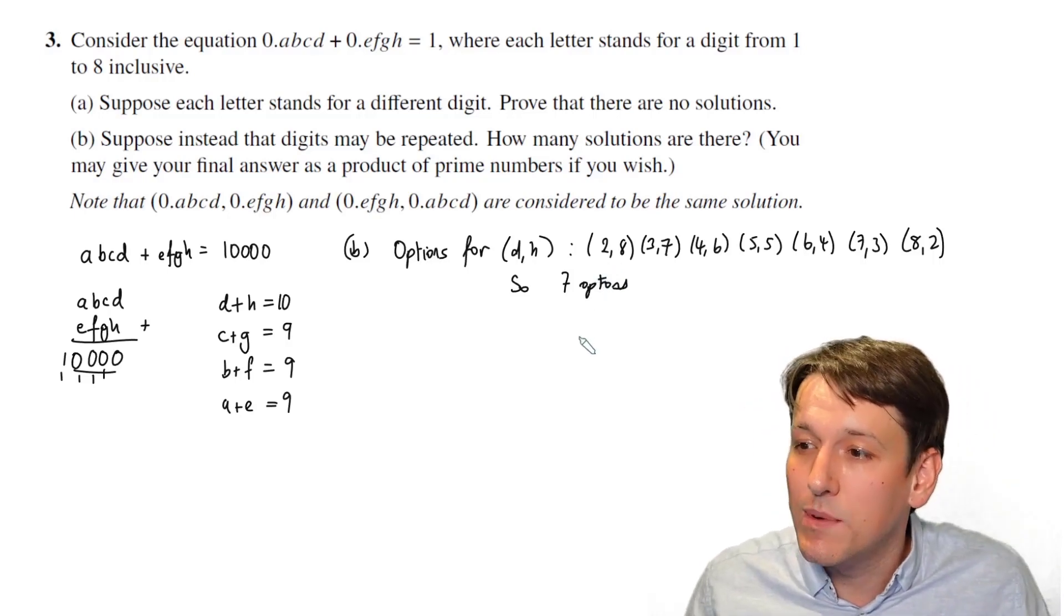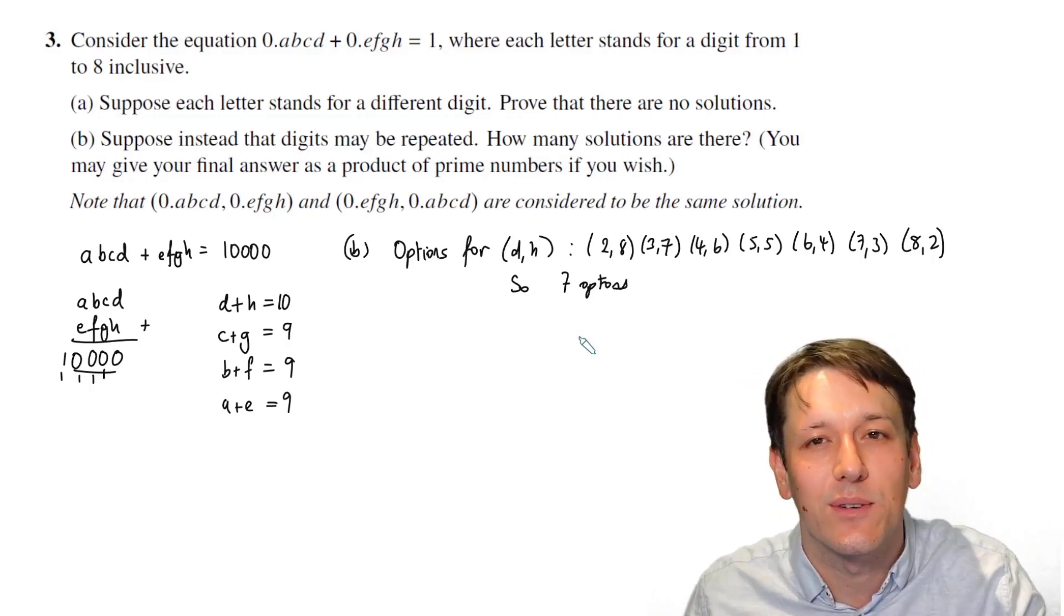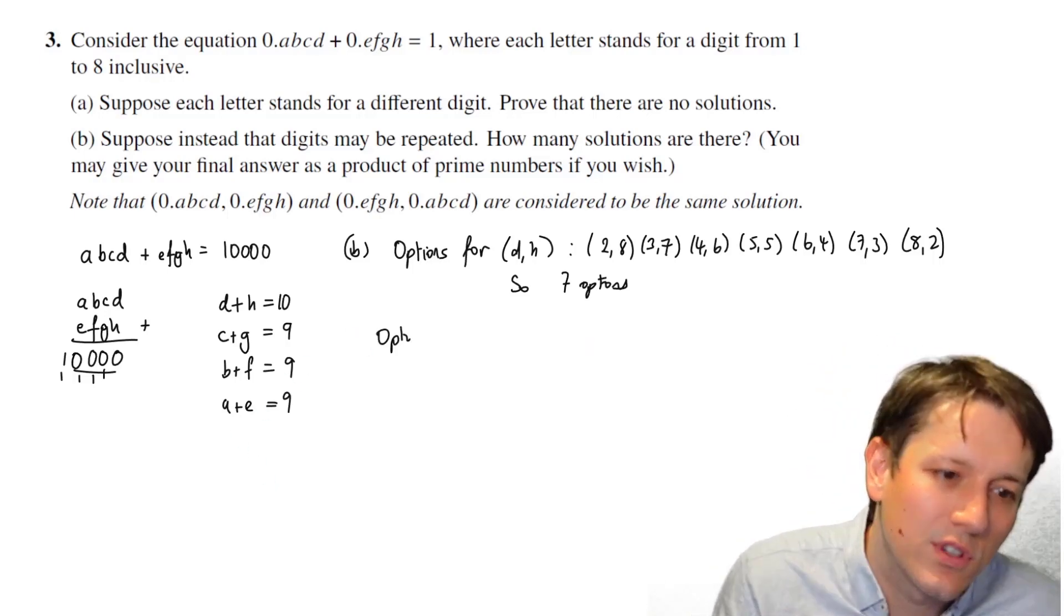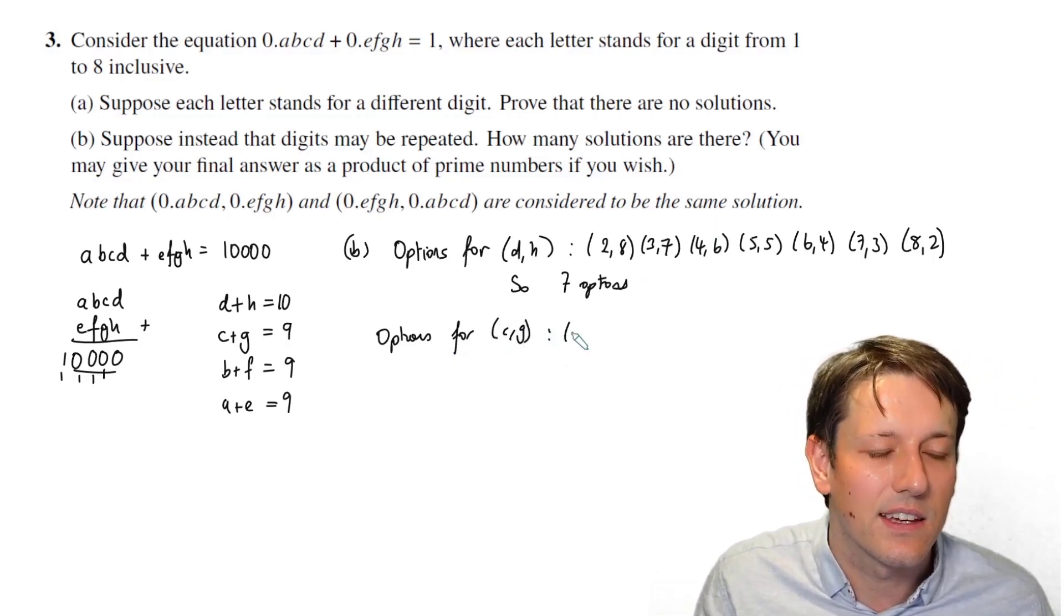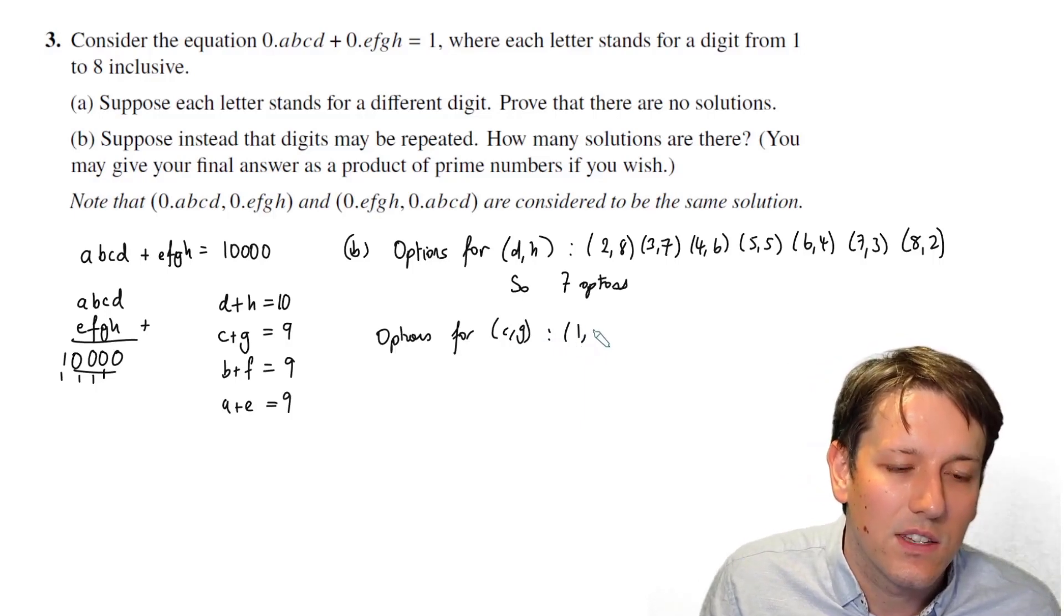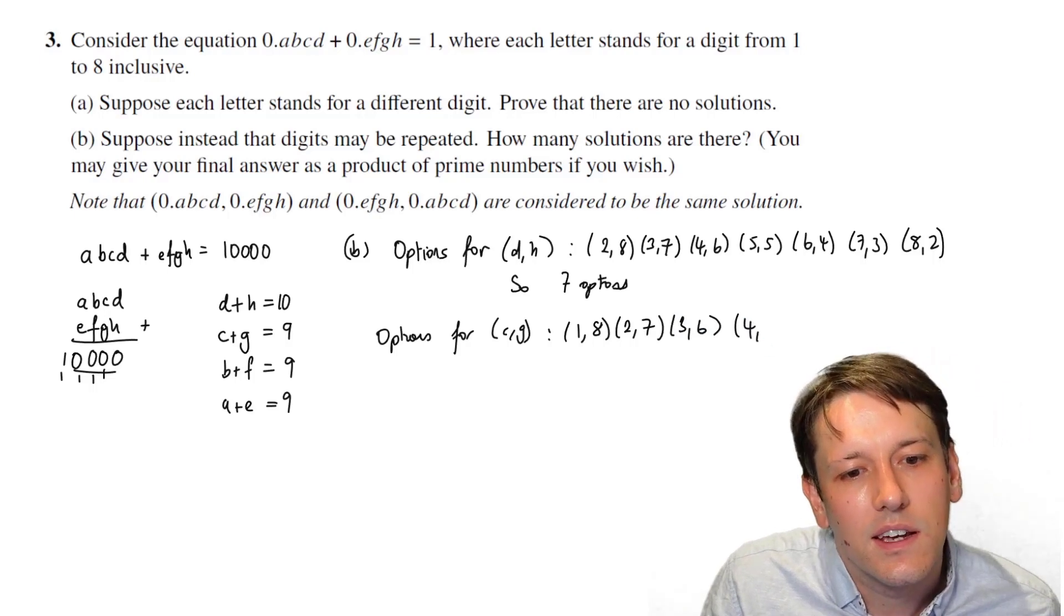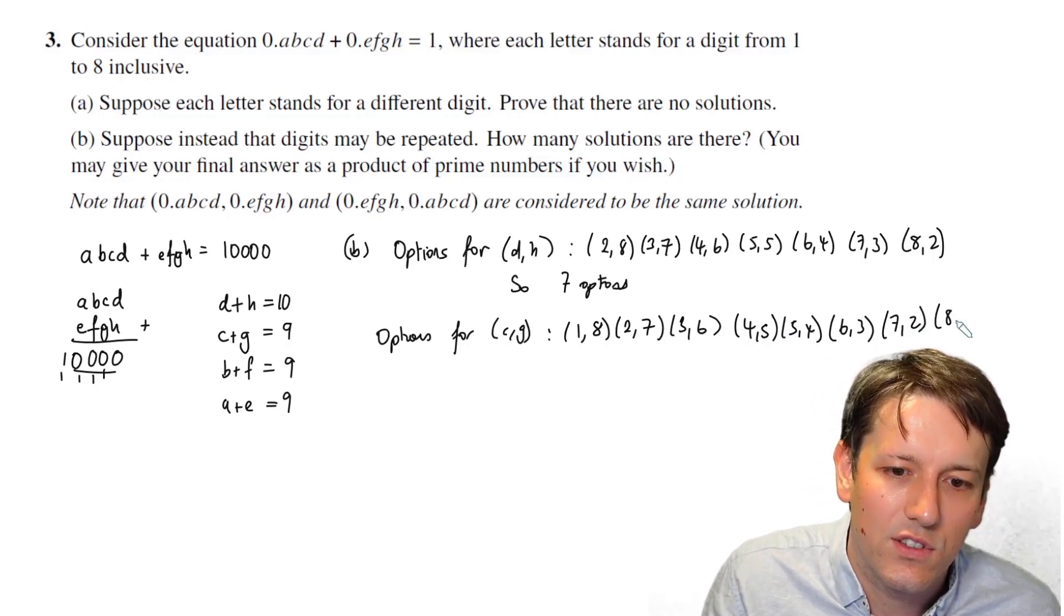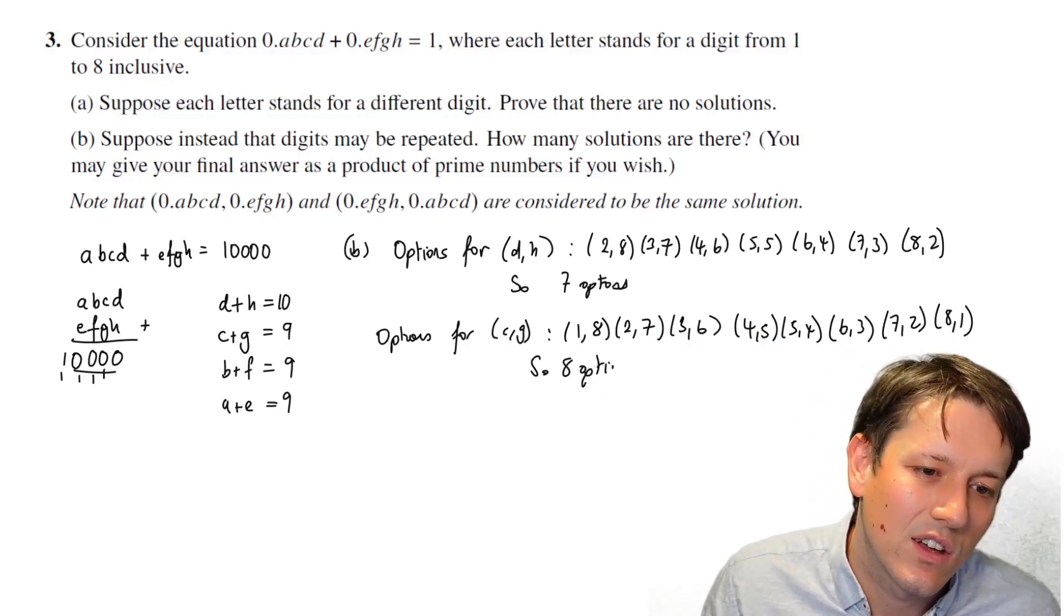So now, at this time, it tells us that we're allowed to repeat digits. So it's not one of those problems where, having used 2 and 8, I've now suddenly got to restrict my options or change my options depending on what happens. When I look at the options for C and G, I'm just allowed to use all the numbers again. So I just need two numbers to add together to give 9. So I could have C is 1 and G is 8. I could have C is 2 and G is 7. I could have 3 and 6. I could have 4 and 5. I could have 5 and 4. I could have 6 and 3. I could have 7 and 2. And I could have 8 and 1. So you can see this time we've got 8 options.